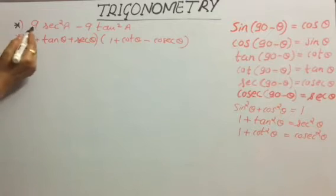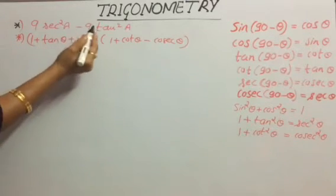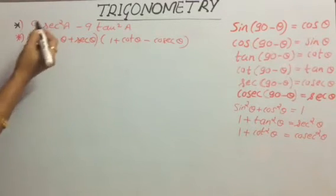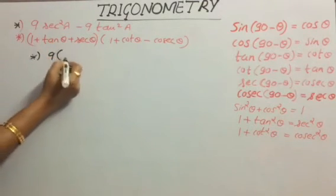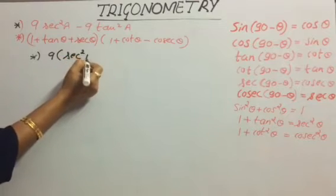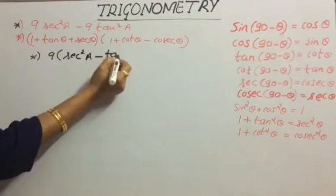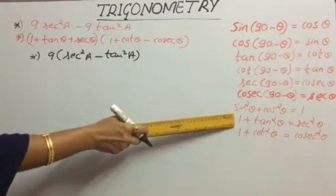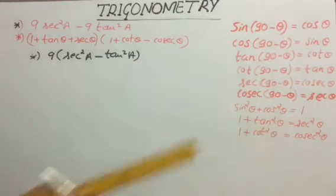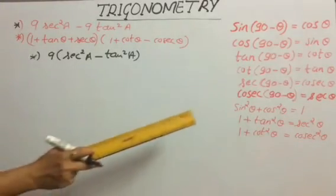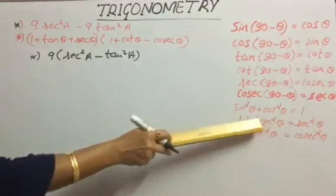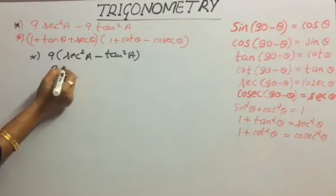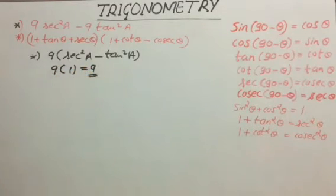Now let's move on to 9sec²a - 9tan²a. From this, we can take 9 as the common factor outside. The remaining terms are sec²a - tan²a. Using the identity 1 + tan²θ = sec²θ, we know sec²θ - tan²θ = 1. So this becomes 9 × 1 = 9.